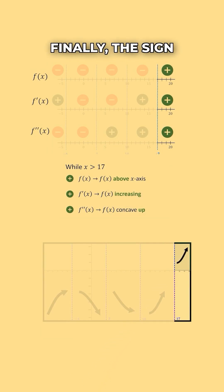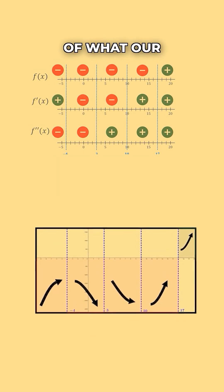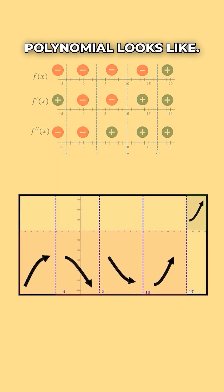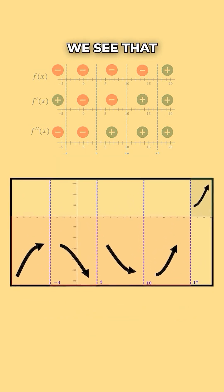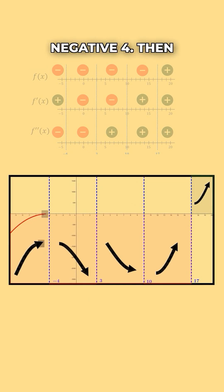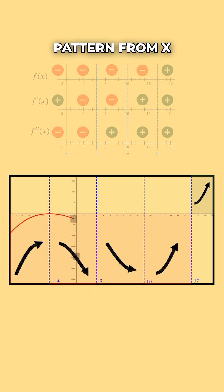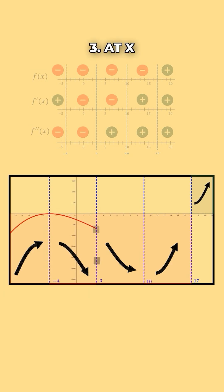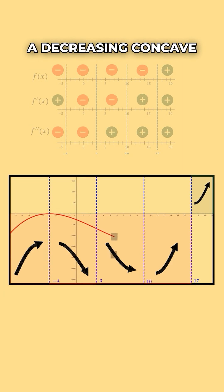The sign chart basically gives us a template of what our graph for our polynomial looks like. We see that when we are below negative 4, our function will be increasing up until x equals negative 4. Then it will start decreasing in this pattern from x equals negative 4 to x equals 3. At x equals 3, we will switch to a decreasing concave up pattern until we get to x equals positive 10.